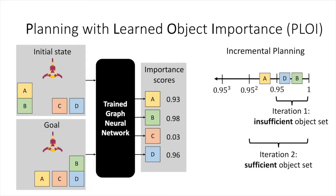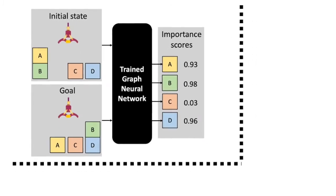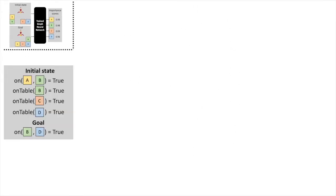Let us now zoom into the graph neural network architecture that we use. First, the initial state and goal are converted into logical expressions over a set of predicates. Then, each node in the graph is associated with an object.